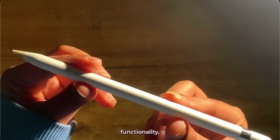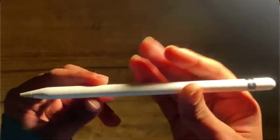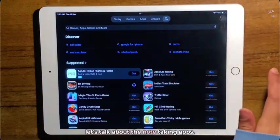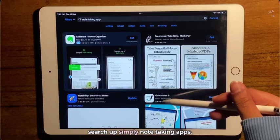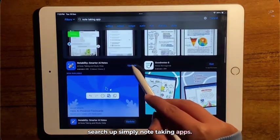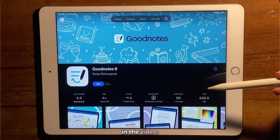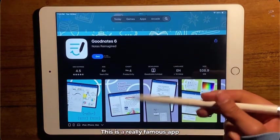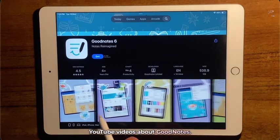The Logitech Crayon is a fantastic budget-friendly option, offering similar feel with excellent functionality. So now that you have your device and your stylus, let's talk about the note-taking apps. First, go to the App Store and search for note-taking apps. Personally, I use Notability, and I'll talk about that later in the video. But for now, let's talk about GoodNotes. This is a really famous app—you can find a million YouTube videos about it. It's all about organization with detailed folders and customization options.